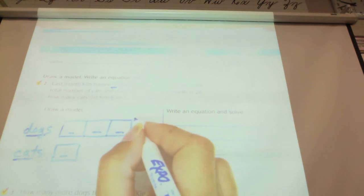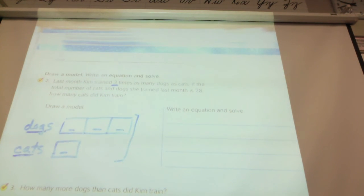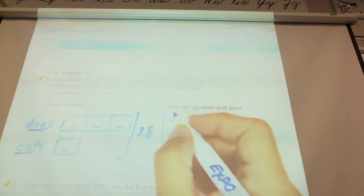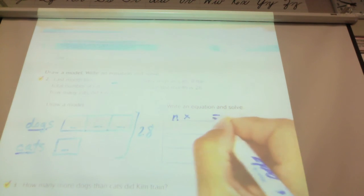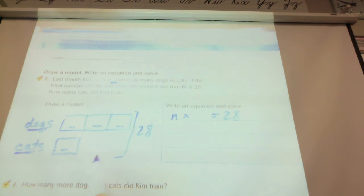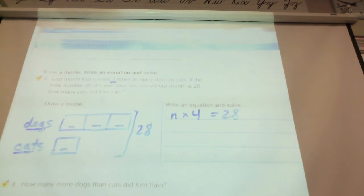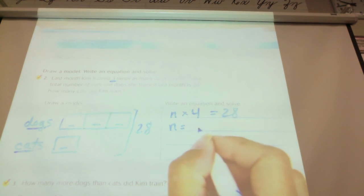Class, what is my total? Oh, total dogs and cats. 28. So my equation is going to be a number times, how many boxes are we using here? How many parts? Four total. One, two, three, four. A number times four equals 28. There's four boxes. A number times four equals 28. What is that number, class? Seven.